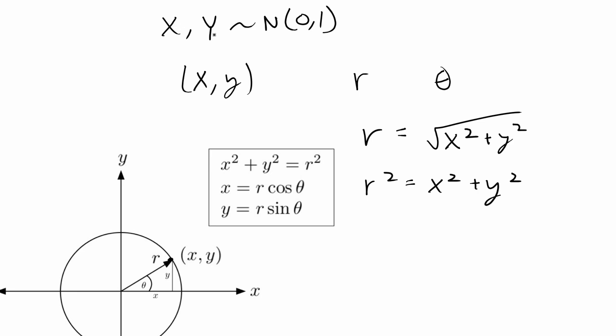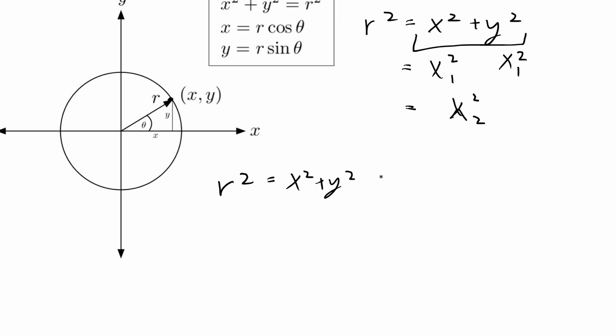If we think of X and Y as normally distributed random variables, then R² = x² + y². X² is the square of a standard normal, which is chi-squared with 1 degree of freedom, and Y² is also chi-squared with 1 degree of freedom. The sum of two chi-squared distributions with df=1 gives a chi-squared distribution with degrees of freedom 2. So R² is chi-squared distributed with degrees of freedom 2.